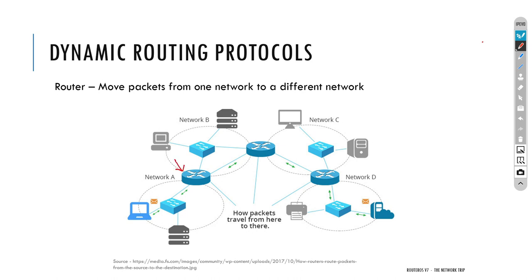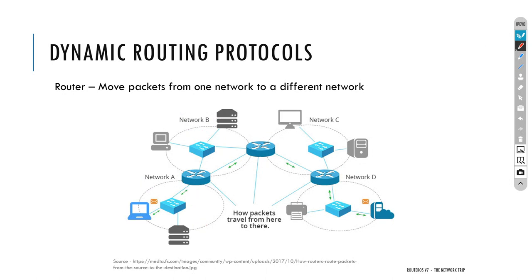We have one router on the left, one on the top, and one on the right. Every router has networks that are directly connected — two networks are directly connected to R1: network A connected out of one interface and network B out of another. There is also a switch in this topology, which is a layer 2 device that simply extends a broadcast domain, allowing several interfaces to connect a large number of devices.